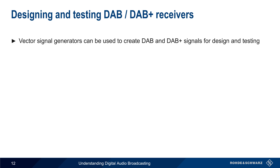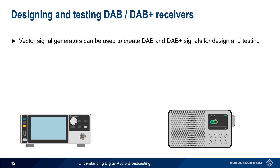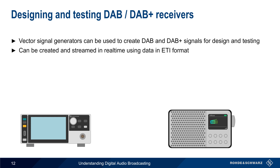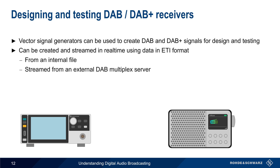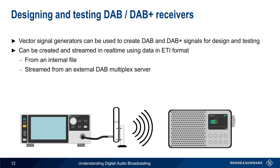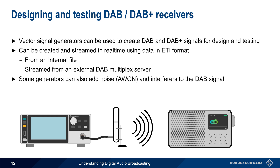DAB and DAB+ receivers are most often designed and tested using vector signal generators to create user-defined DAB signals. The DAB signals are created and/or streamed in real-time using data in the Ensemble Transport Interface, or ETI format. This ETI data can be provided in the form of an internal file, or may be streamed into the generator from an external multiplex server. The vector signal generator transmits the modulated RF signal to the receiver over a direct cable connection, or the signal can be radiated using an antenna. Some vector signal generators can also add noise and/or interferers to the generated DAB signal, allowing for more realistic test scenarios or testing under challenging conditions.